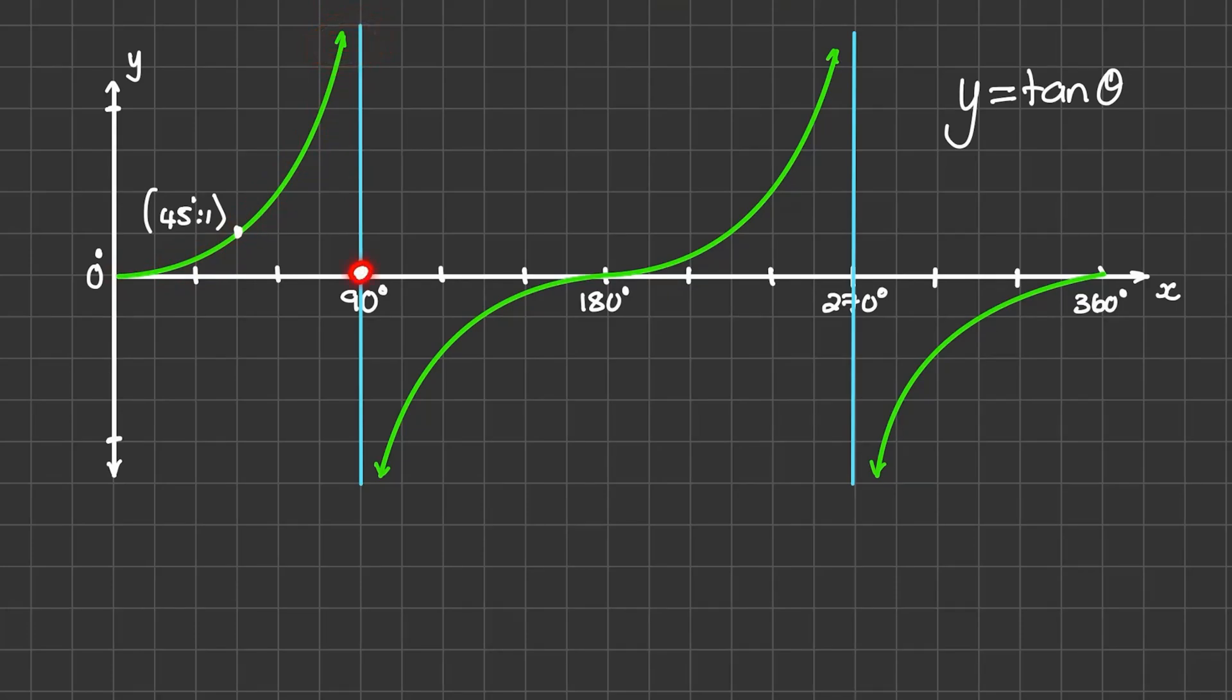But directly after 90 degrees, the graph is very negative or it produces a really negative result. And then closer to 270 degrees from the left, it's an extremely positive result. But just after 270 degrees, the tangent of theta flips to a negative result.